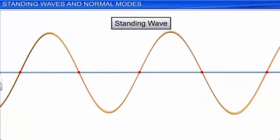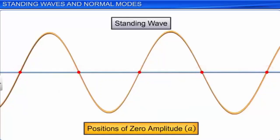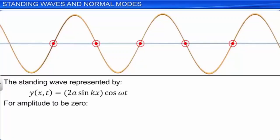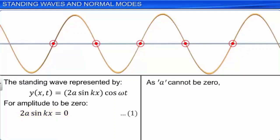Let us now find the positions of the elements of the stretched string where the amplitude of the standing wave is zero. The standing wave is represented by y(x,t) = 2a sin(kx) cos(ωt). For amplitude to be zero, 2a sin(kx) must equal zero. As a cannot be zero, sin(kx) must equal zero. This means kx = nπ. Let this be equation 2.